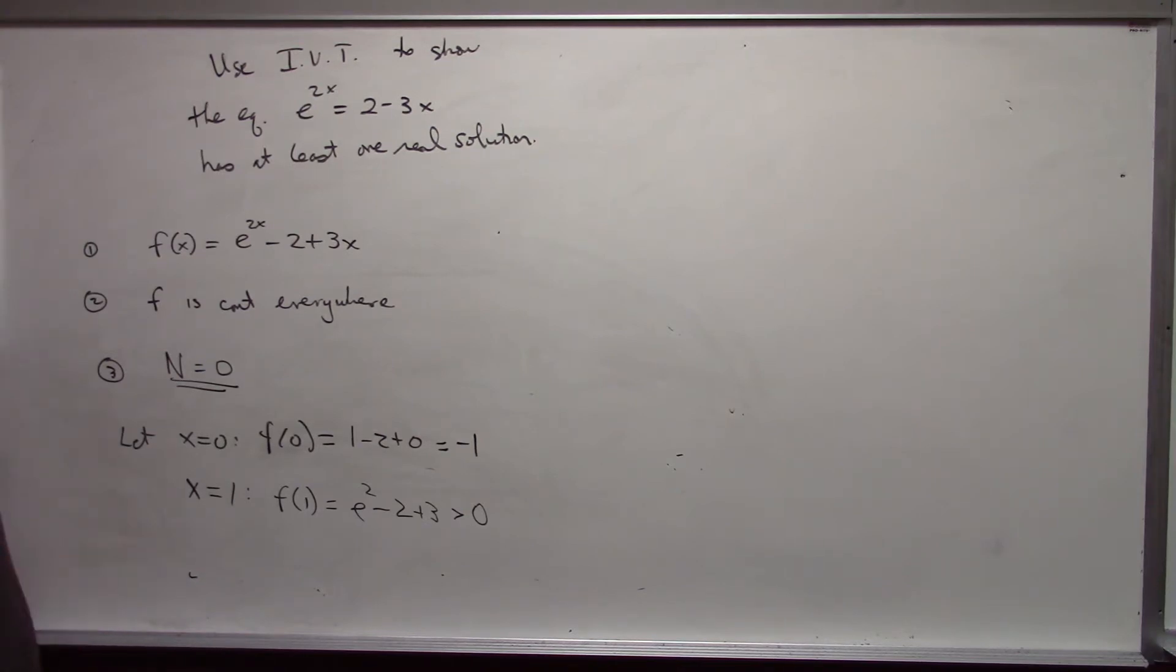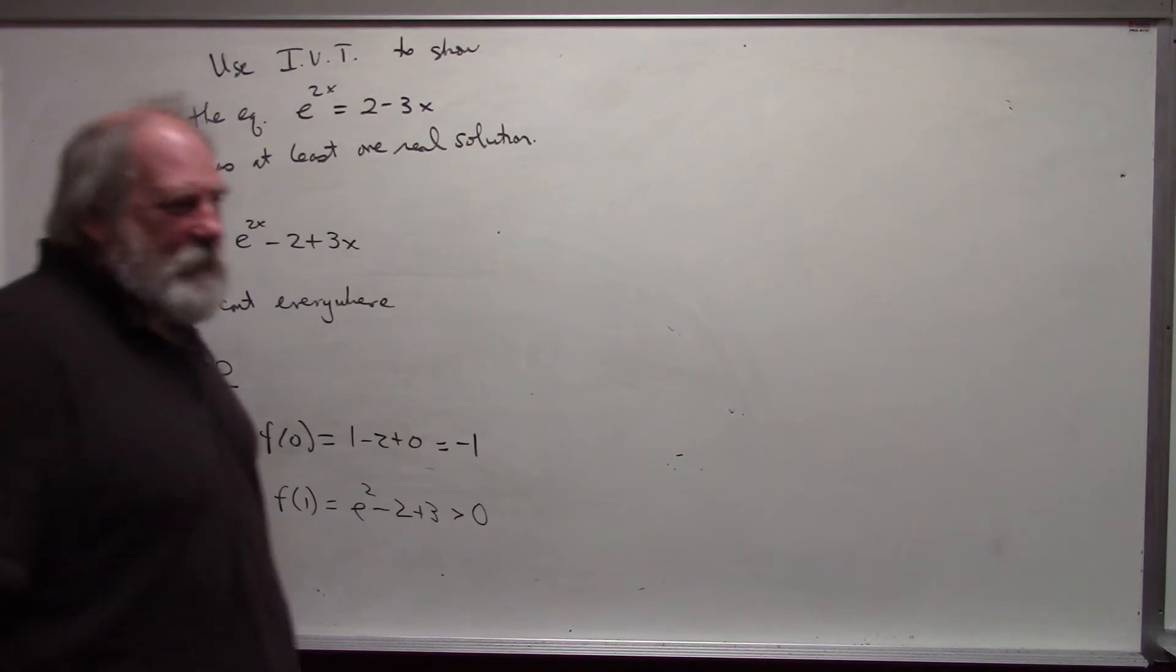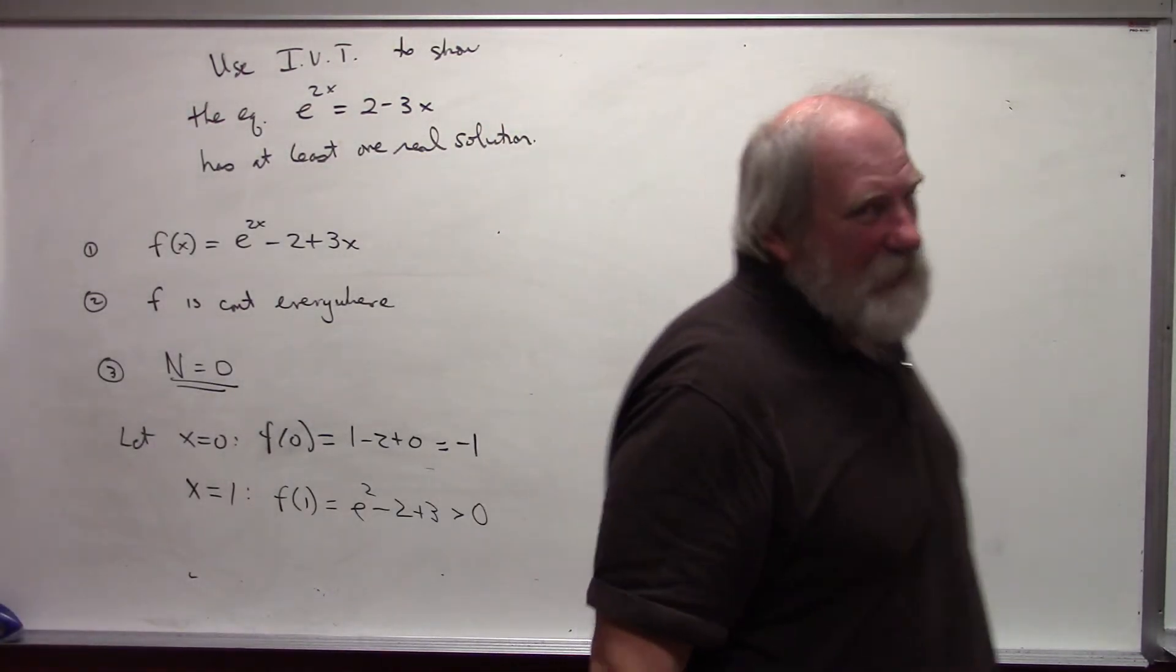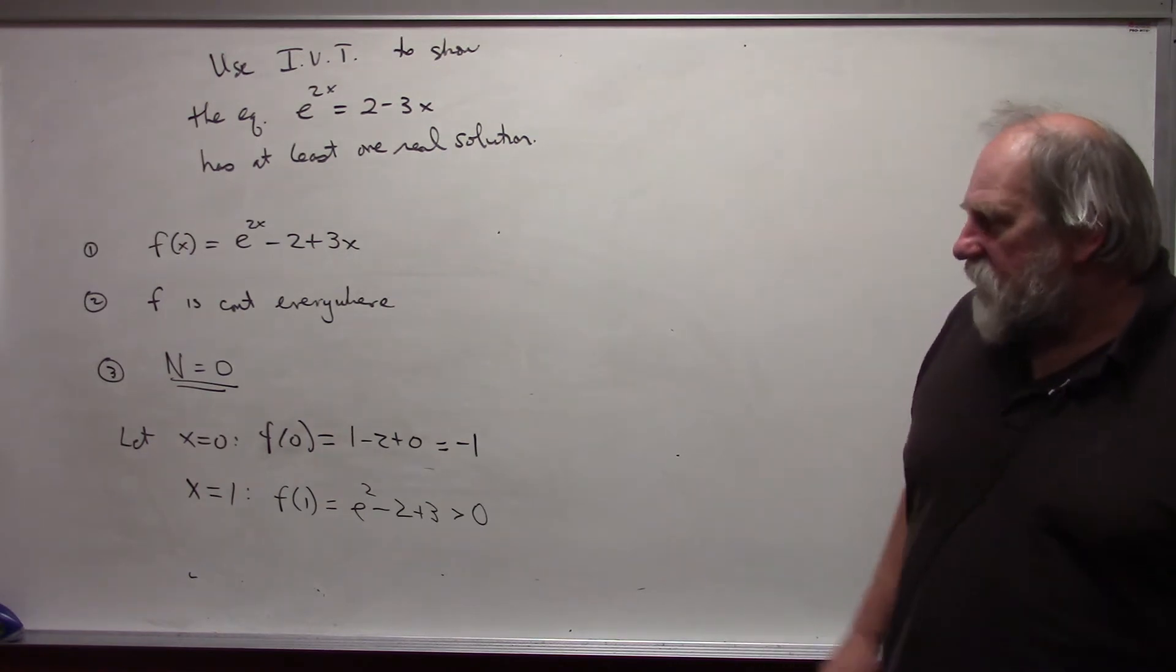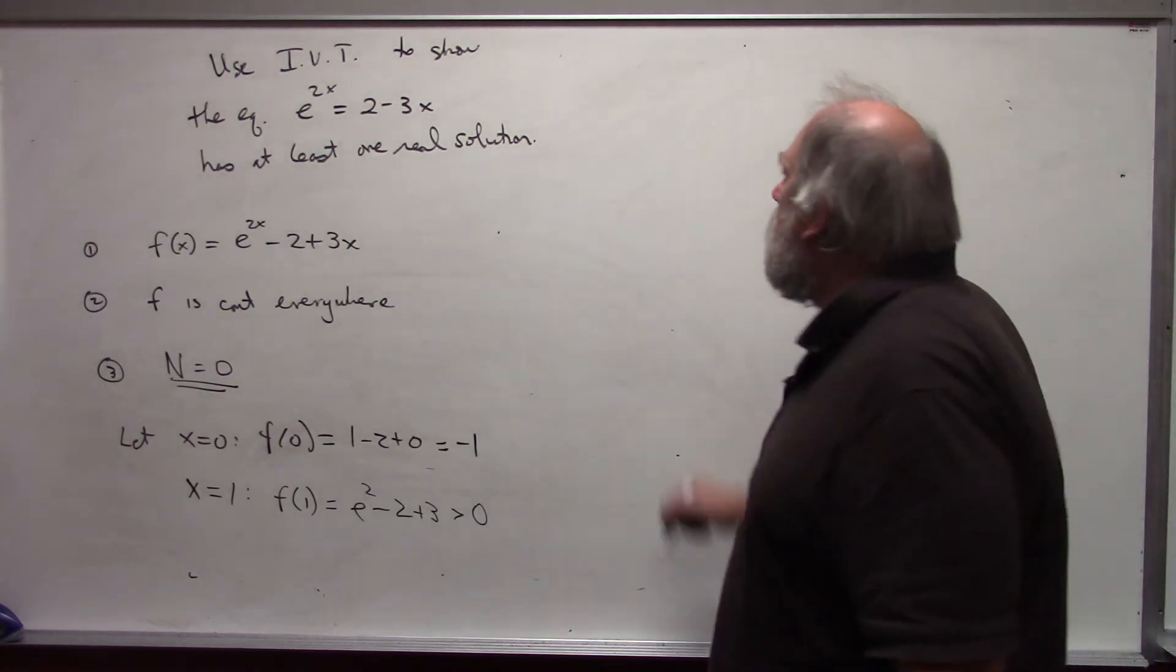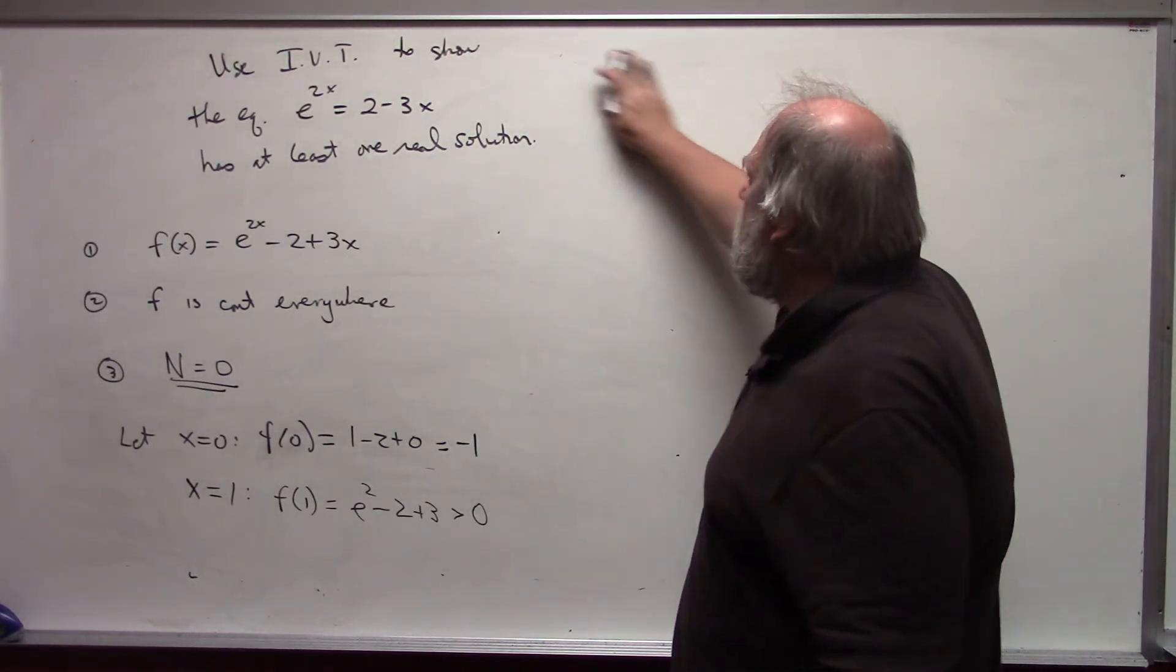E squared is positive. And of course, negative two plus three is positive. So therefore, combined, it's positive. Okay, so I now have an a and b where my value for n is between f(a) and f(b). I have a continuous function. IVT then applies.